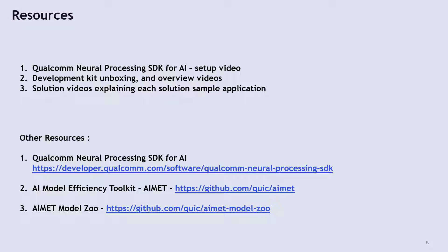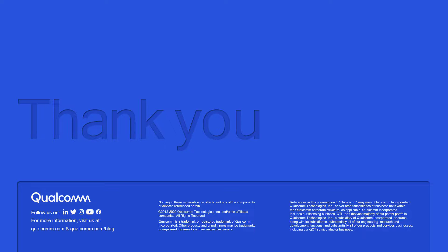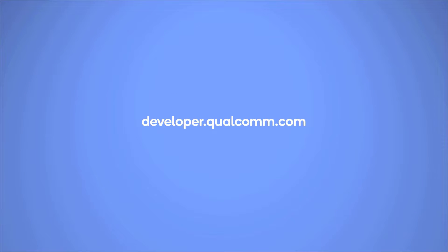Here are the resources shared in the AI toolkit. The first resource is a setup video to set up Qualcomm Neural Processing SDK for AI. This video should help beginners to set up the SDK and experiment with it. We are also sharing unboxing videos and overview videos of the HDK hardware on how to set up the hardware. Then we have videos for each and every solution explaining the solution and how to change models. There are also other resources available on Qualcomm Developer Network: Qualcomm Neural Processing SDK for AI, AI Model Efficiency Toolkit, and AI Model Efficiency Toolkit Model Zoo, where Qualcomm maintains optimized models for Snapdragon hardware. Thanks for watching this video — for more resources and support, do visit Qualcomm Developer Network, and have a great day.